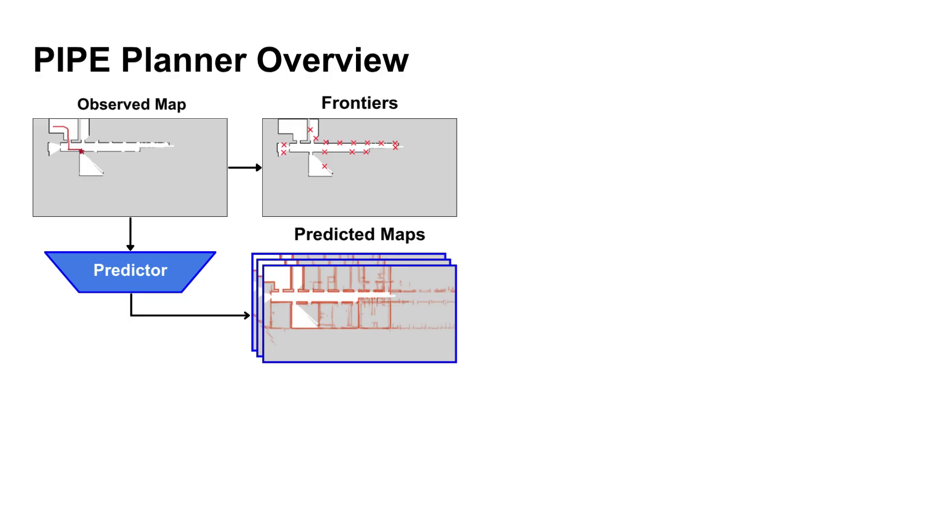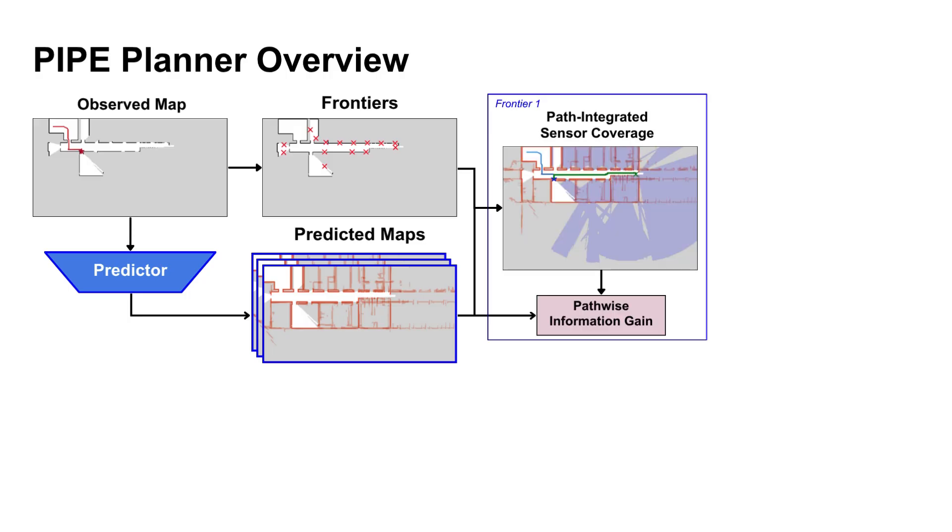Meanwhile, the robot generates an ensemble of predicted maps with a pre-trained map predictor. Instead of estimating sensor coverage at a point, we integrate cumulative sensor coverage along the points on the path to the frontier, hence the path-integrated sensor coverage and information gain.